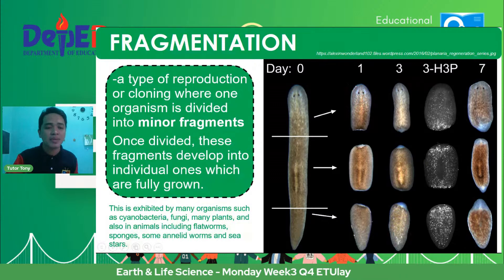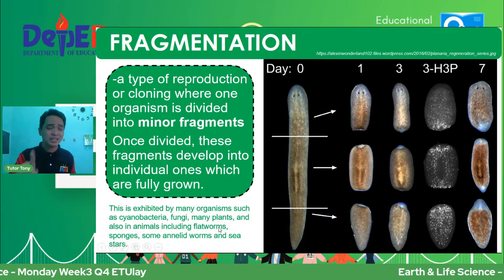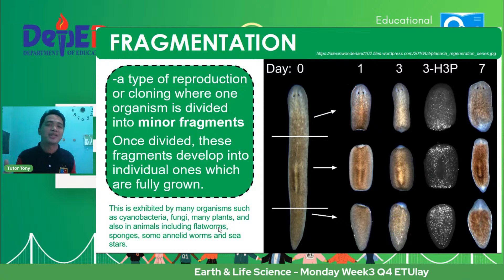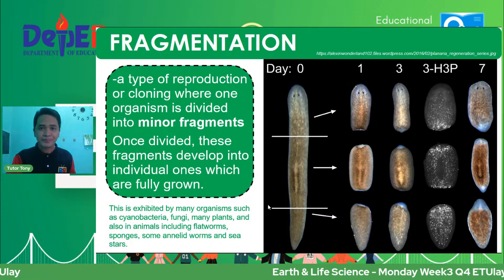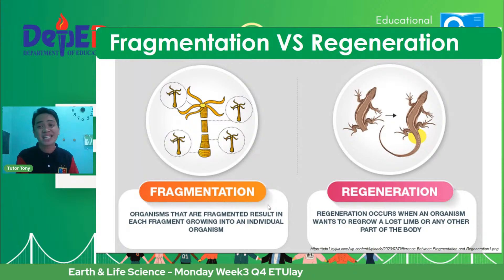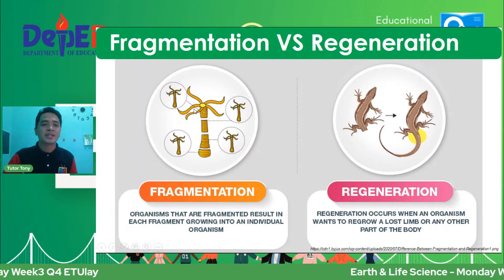Fragmentation can be done by cyanobacteria, different fungi species, and plants. In plants, stem cutting — yung mga grafting, marcotting — that is a kind of fragmentation. From a stem planted in soil, roots eventually grow into new plants. It can also be done by animals: flatworms, sponges — the simplest form of animals found in the ocean — some annelid worms, and of course the starfish.